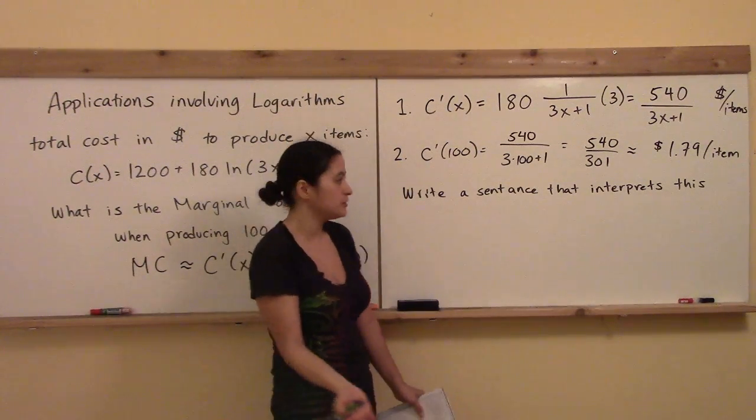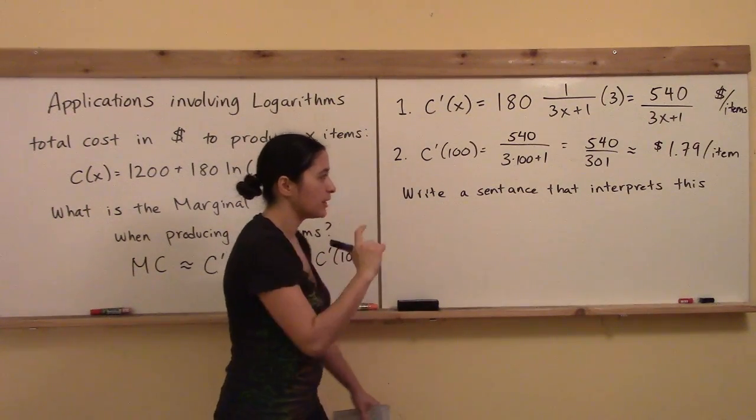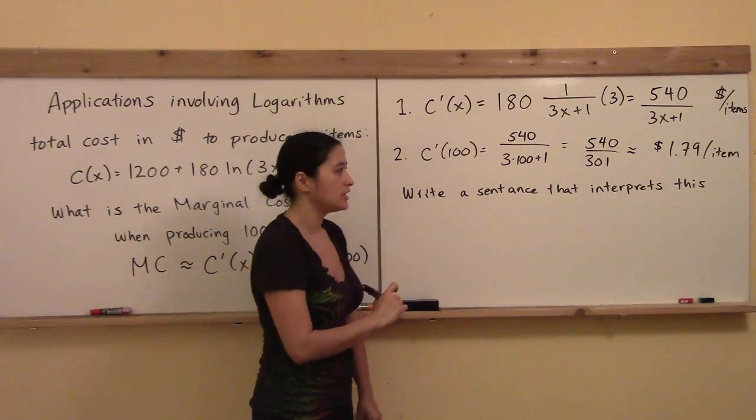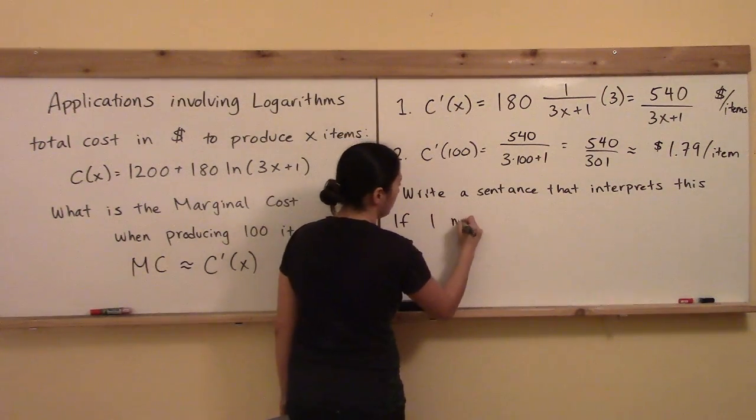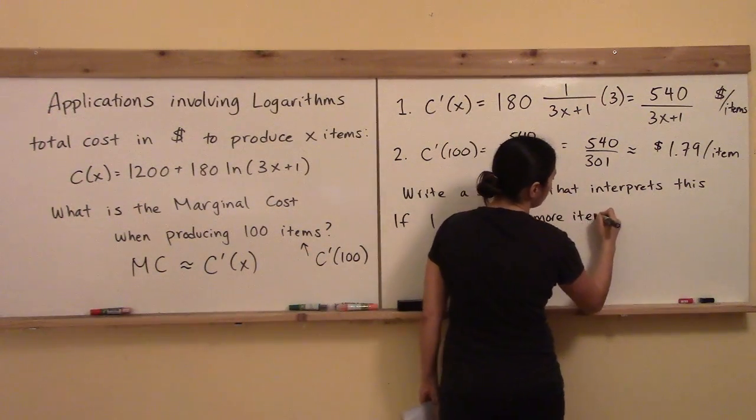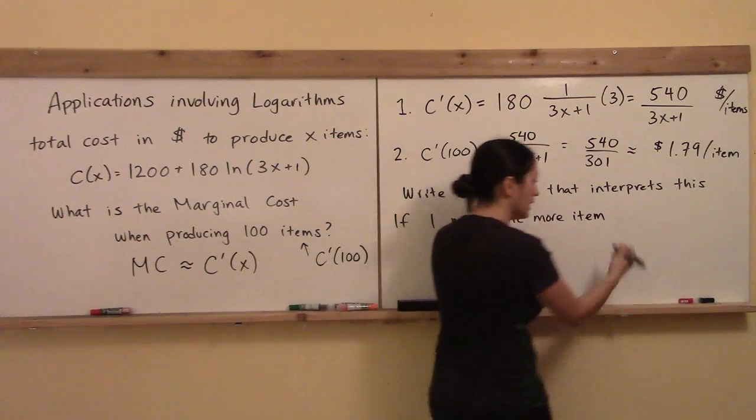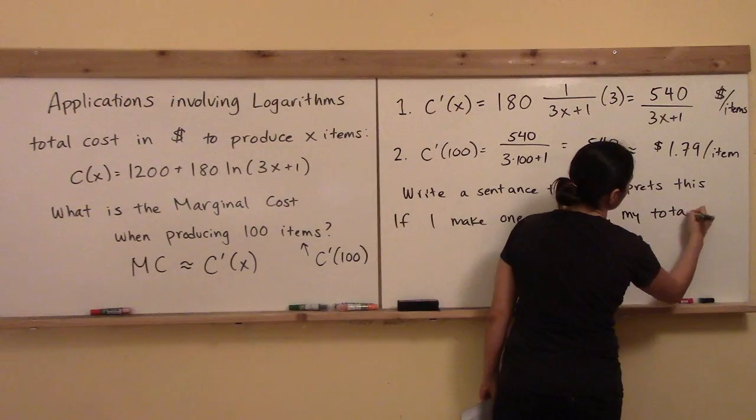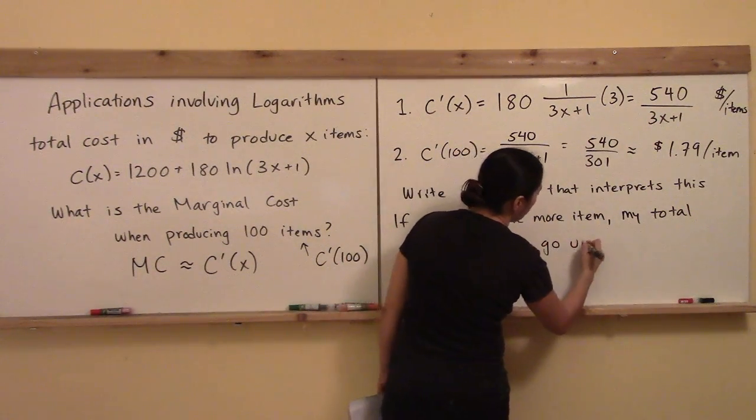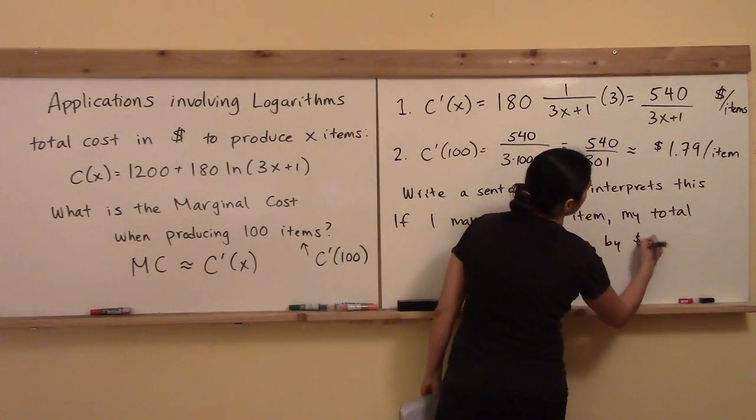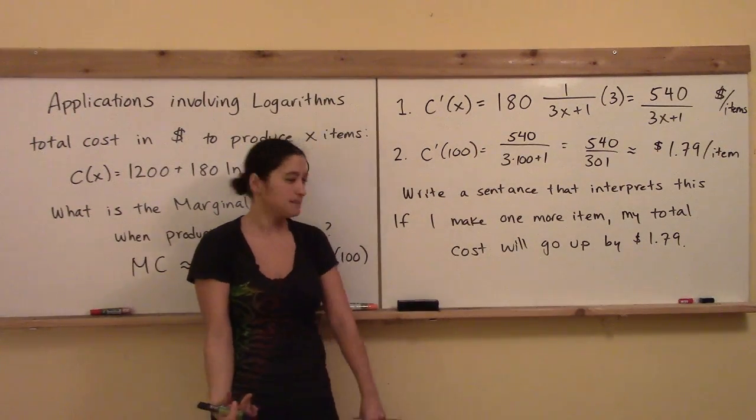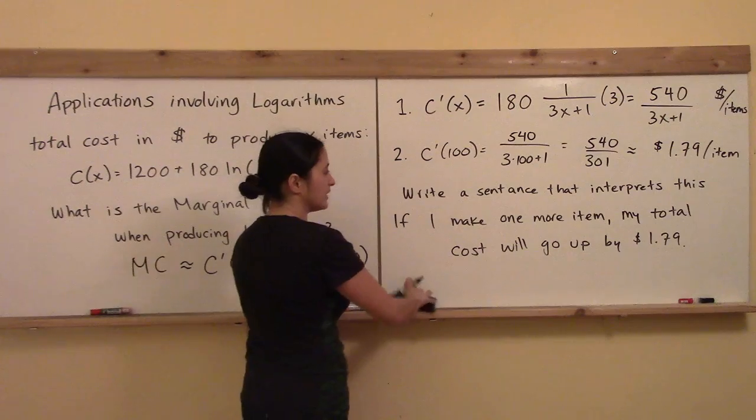So now I'll try. Let's see, the derivative. So that means that if I go up by 1 in the x, then my y is going to change by that much. So if I make one more item, so I go from making 100 items to making 101 items, my y value, which is my total cost, my total cost will go up, because it's a positive value, by the amount $1.79. Did you have something written like that? Maybe you did.